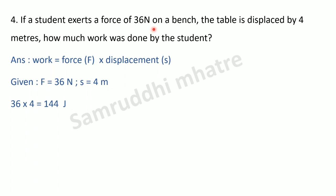Last question: if a student exerts a force of 36 newtons on a bench and the table is displaced by 4 meters, how much work was done by the student? Work done formula: W = F × s. Force is 36 newtons and displacement is 4 meters. Work done = 36 × 4 = 144 joules. So the answer is 144 joules.